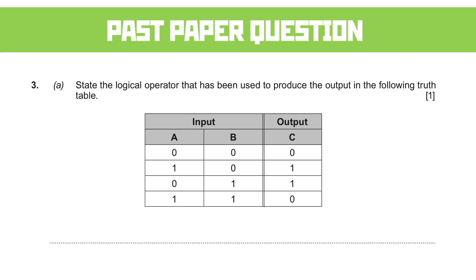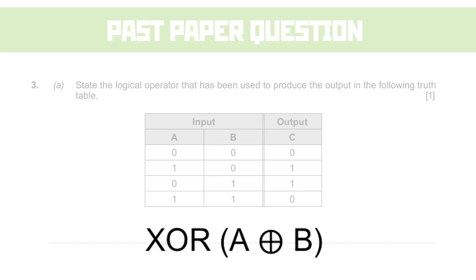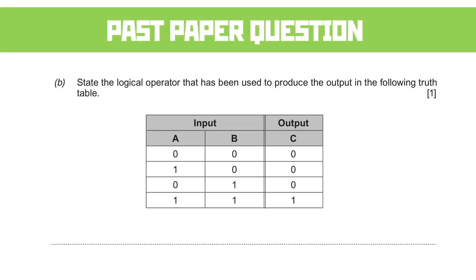Notice you get the mark for either naming the operator or showing it as an expression, but seemingly not for just the symbol on its own. And this is why it's always worth checking the mark schemes, because how many people would have stuck that wonderful plus in a circle down on its own and got the dreaded zero marks. On to another.